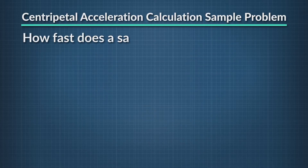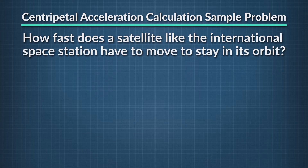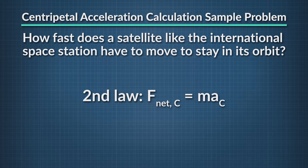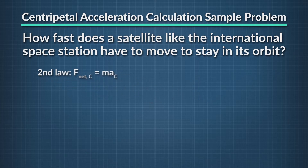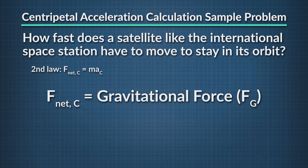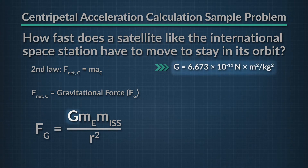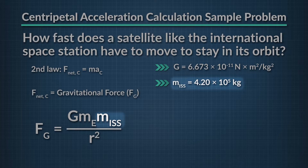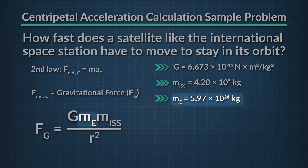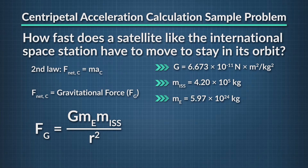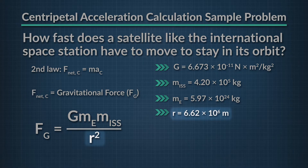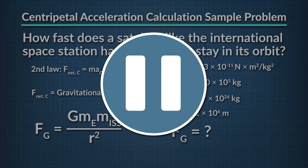Now here's one for you to try. How fast does a satellite like the International Space Station have to move to stay in its orbit? According to Newton's second law, an object of a given mass will accelerate in the direction of the net force. For the ISS traveling in a circle around the Earth, the net force acting is gravitational force. The gravitational constant G is 6.673 times 10 to the negative 11th newton-meters squared per kilogram squared. If the mass of the ISS is 4.20 times 10 to the fifth kilograms, the mass of the Earth is 5.97 times 10 to the 24th kilograms, and the distance between the center of the Earth and the station is 6.62 times 10 to the sixth meters, what is the total gravitational force acting on the ISS? Press pause, give it a try, and come back to check your work.